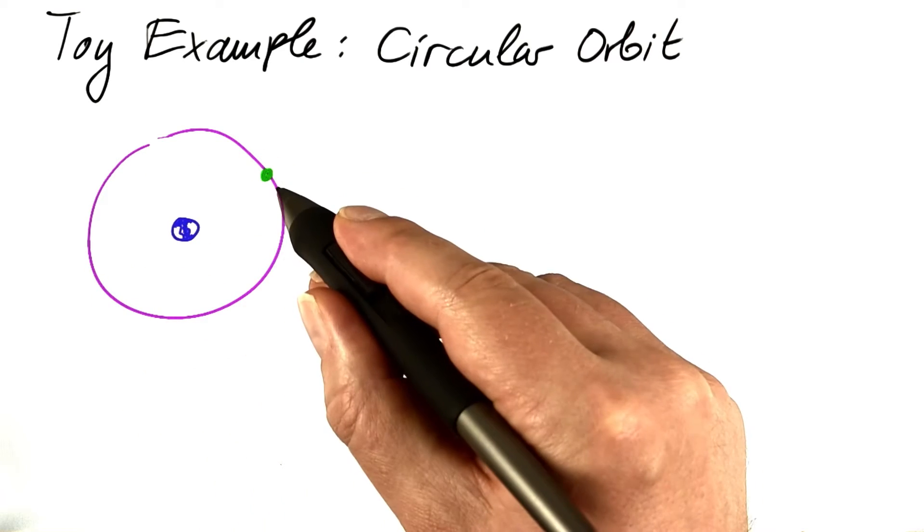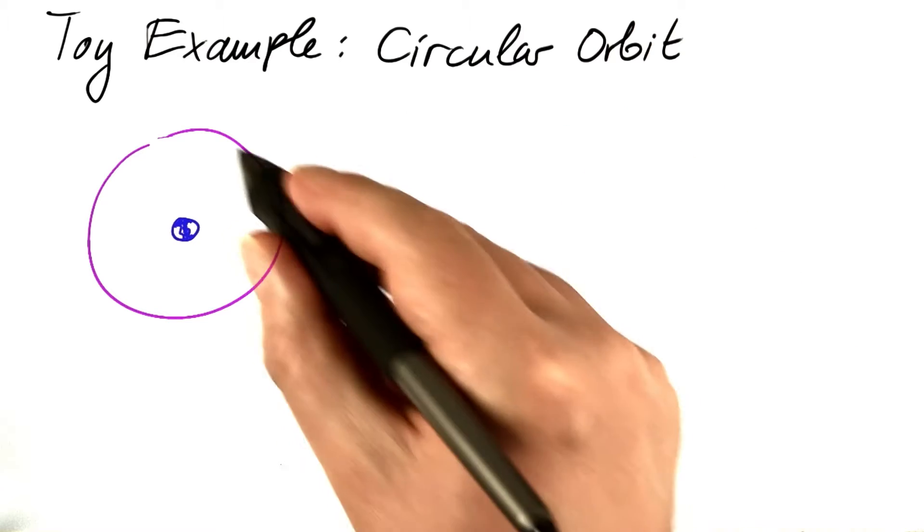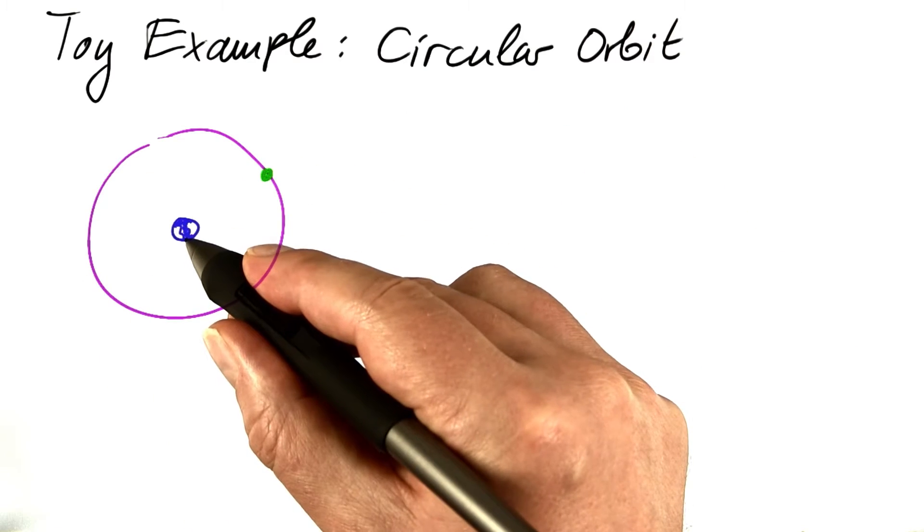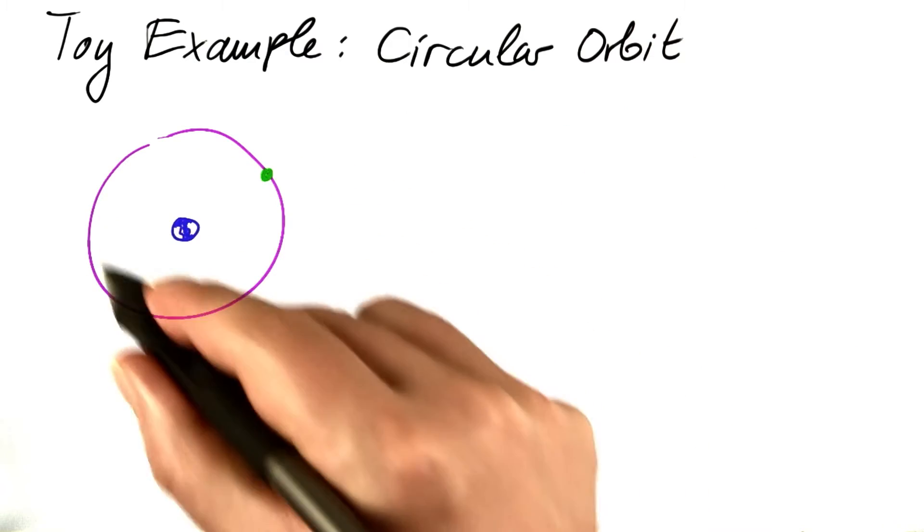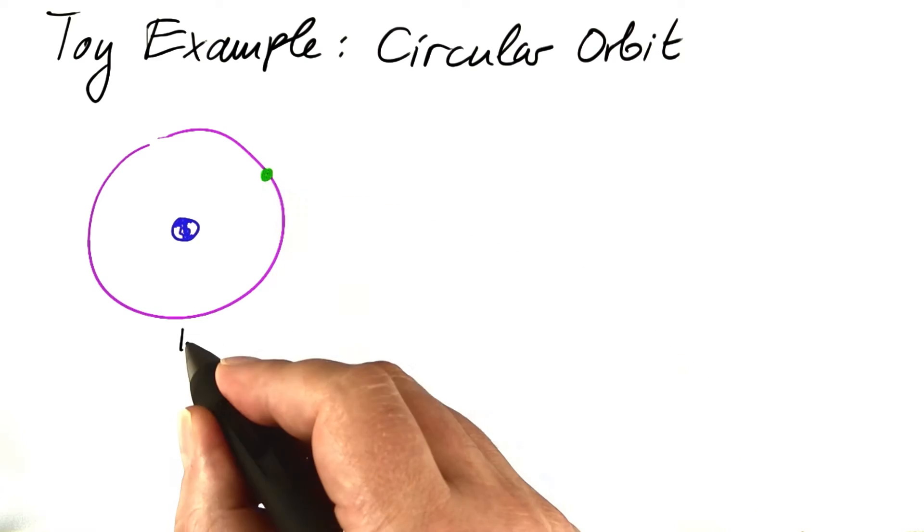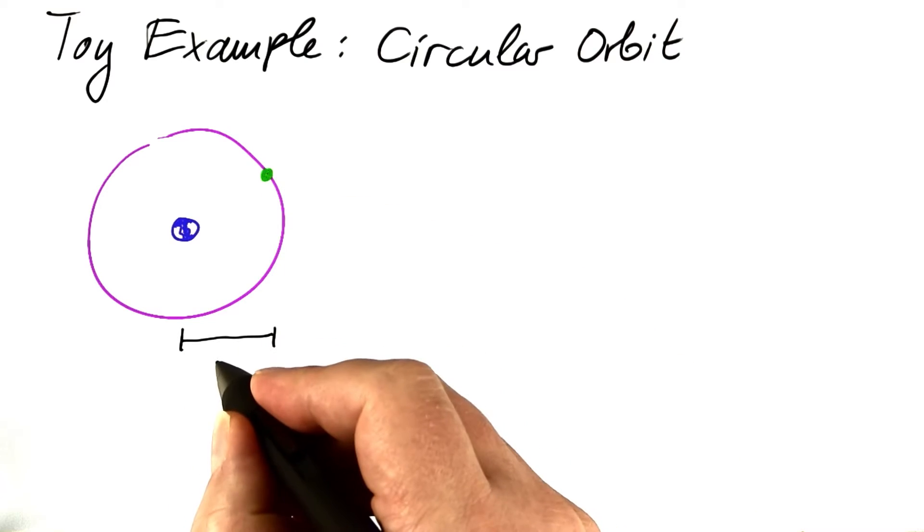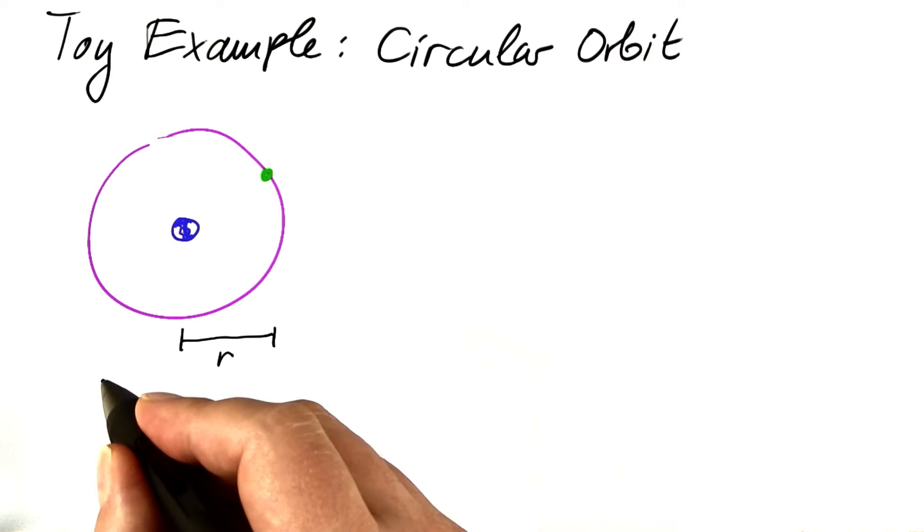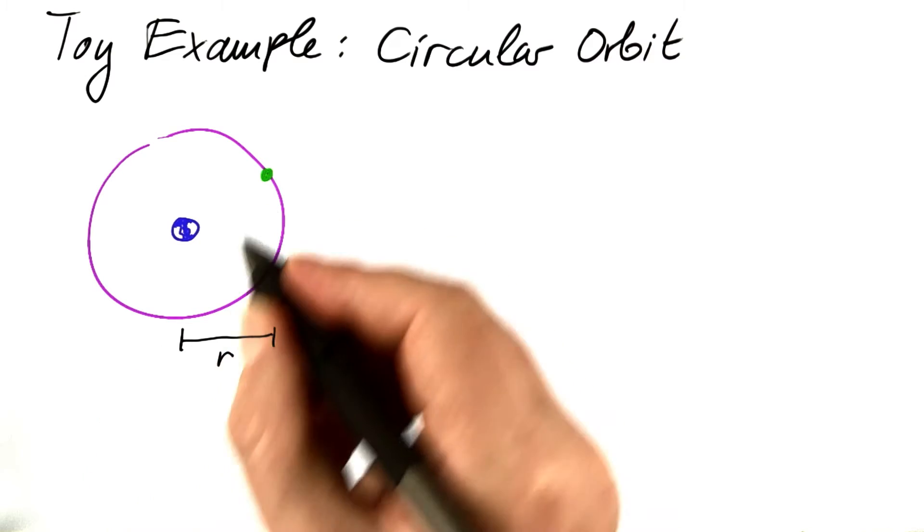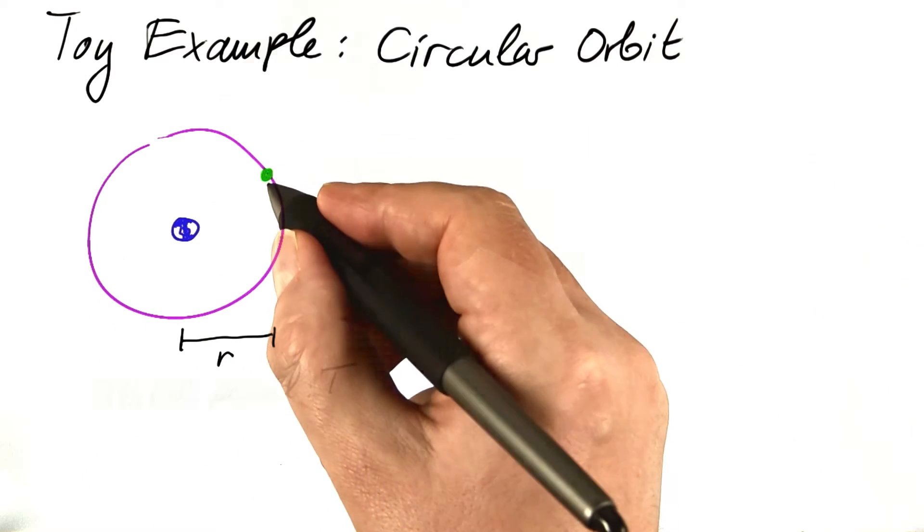And this toy example will be a circular orbit, a spacecraft moving around Earth, for instance, with the Earth at the center of this orbit. Let's call the radius of that orbit r, and let's call the orbital period, the time it takes for one orbit, capital T.